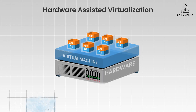Hardware-assisted virtualization allowed multiple operating systems and their applications to run concurrently on a single physical machine, each within its own isolated virtual machine. Instead of multiple users sharing a mainframe, multiple VMs — each potentially representing a different user or application — could now share the underlying hardware. Multi-tenancy became a key enabler of cost savings in these environments.